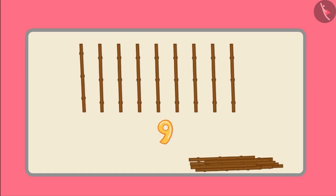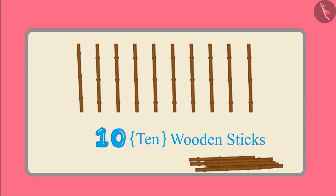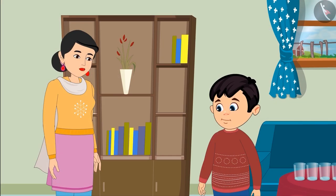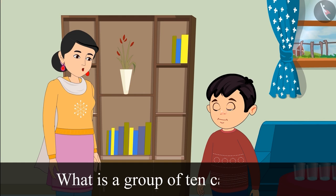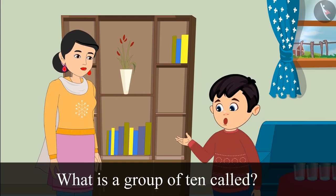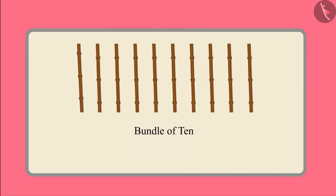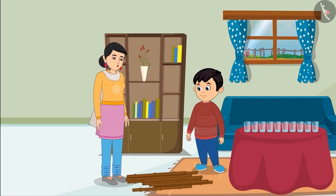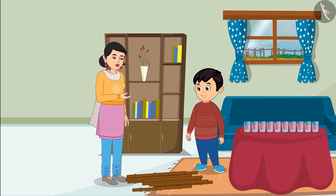Don't worry, Choto. I will tell you how to count beyond nine. If we add one more wooden stick to nine wooden sticks, then we get ten wooden sticks. Do you know what any group of 10 is called? Kids, it is called a bundle of 10. If the number of items is 10, then we can say it is in a bundle of 10.